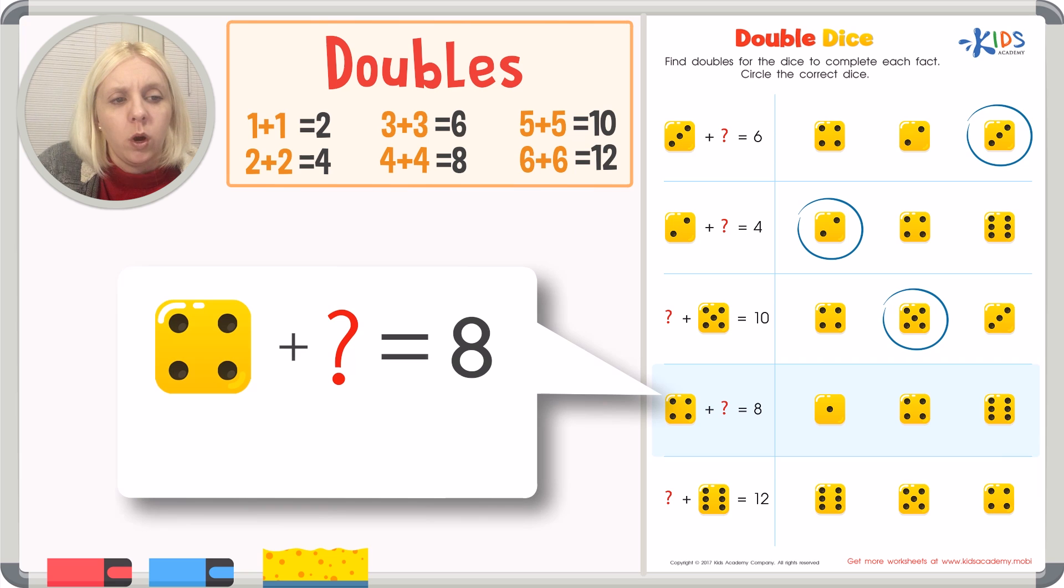So if you come over here, you're going to notice one, two, three, four. Four plus what equals eight? We're looking for the double. So we're looking for four plus four, and over here, this is four. So we're going to circle that right here.